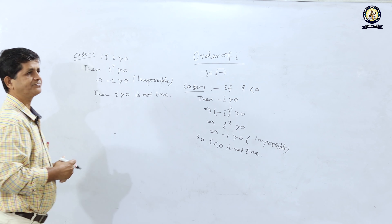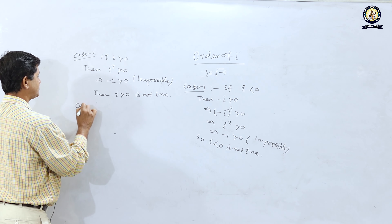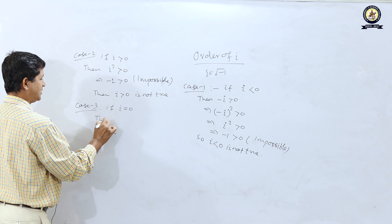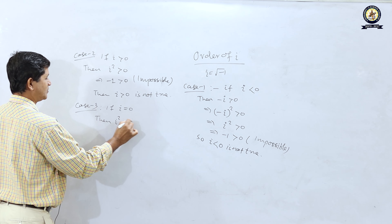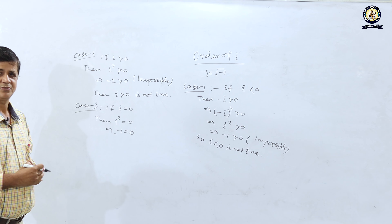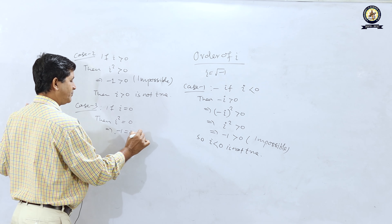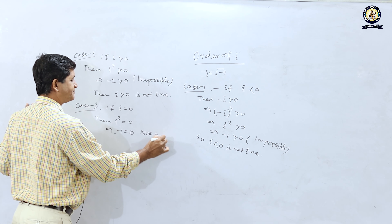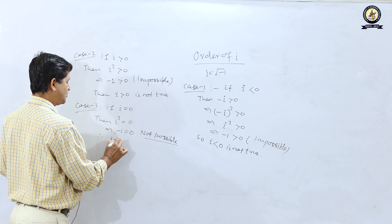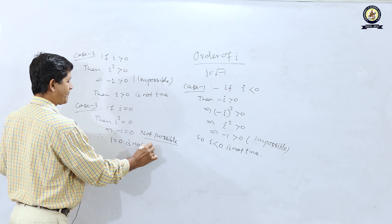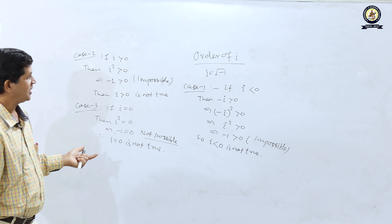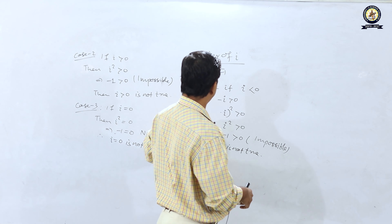Case 3: if i = 0, then i² = 0, meaning −1 = 0, which is also not possible. Hence i = 0 is not true. So i is not less than 0, not greater than 0, and not equal to 0.